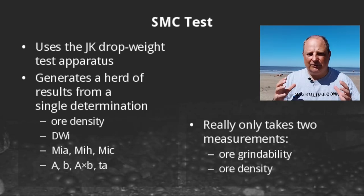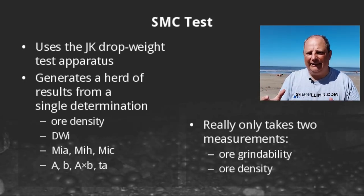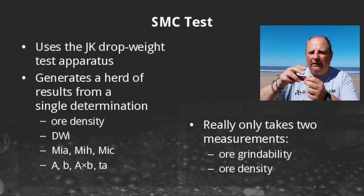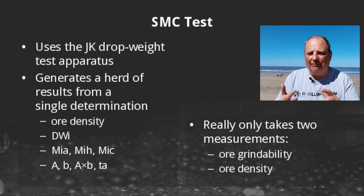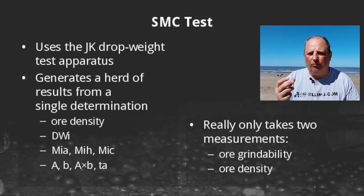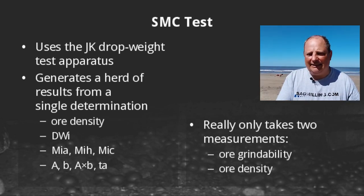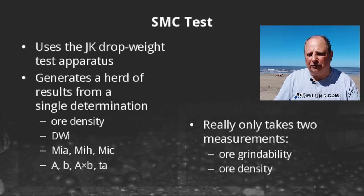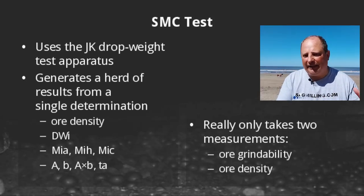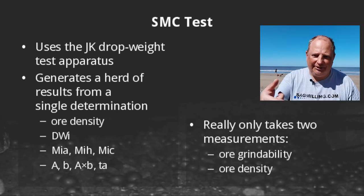The SMC test uses the JK drop weight test rig and generates a whole collection of grindability numbers. You basically measure one underlying grindability metric and then extrapolate all the other numbers from that. The DWI, MIA, MIC, MIH, A, B, A×B, and TA are all derived from one measurement. The SMC test also gives you a density via water displacement before running the test — that's a second useful measurement for free. The ore hardness comes out calibrated in different ways depending on whether you're sizing an HPGR (MIH), a tumbling mill (MIA), or a crusher (MIC).